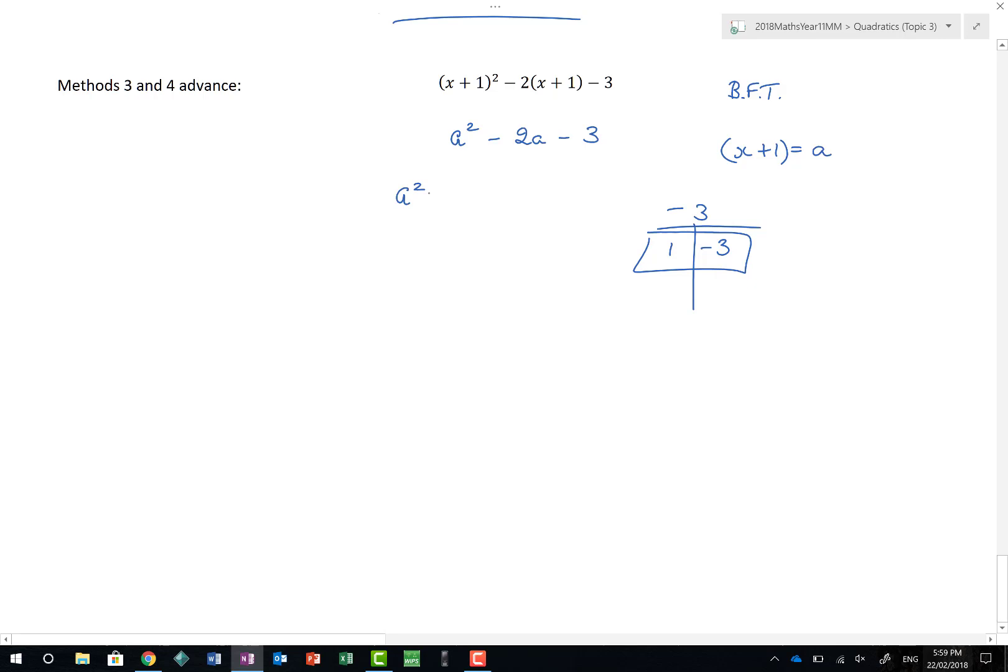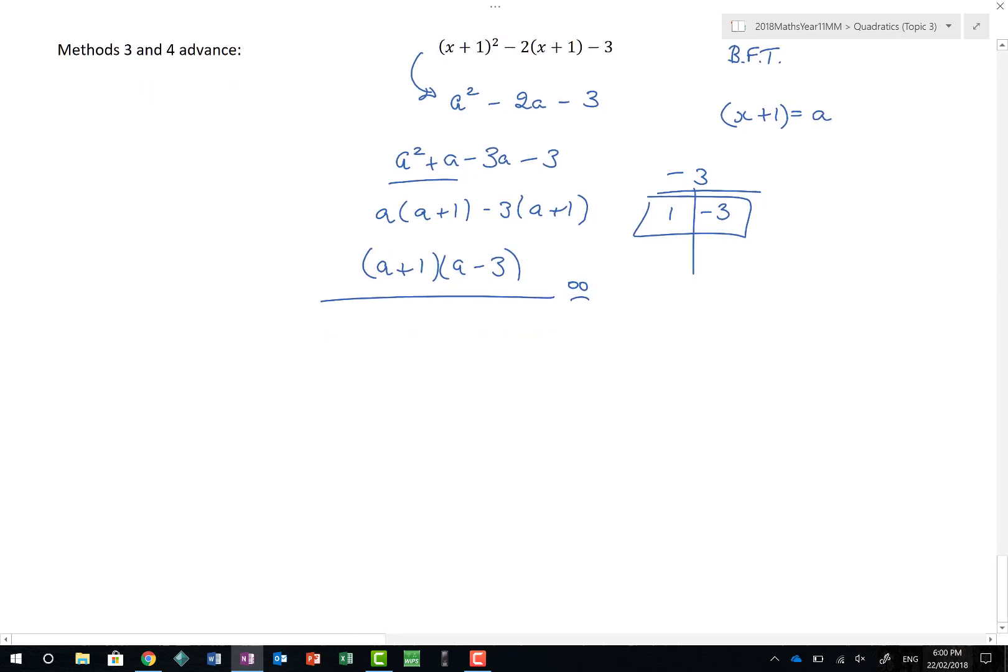I'd end up with a squared, plus a, minus 3a, minus 3. I'd factorize my pairs, a, a plus 1, minus 3, a plus 1. So I'd end up with a plus 1, a minus 3. That's not my answer. If you left it there, you'd unfortunately get loads of marks taken away, because you made it easier for yourself and you said, well, let a be x plus 1. Having done that, I would then need to go back and put my x plus 1 back.